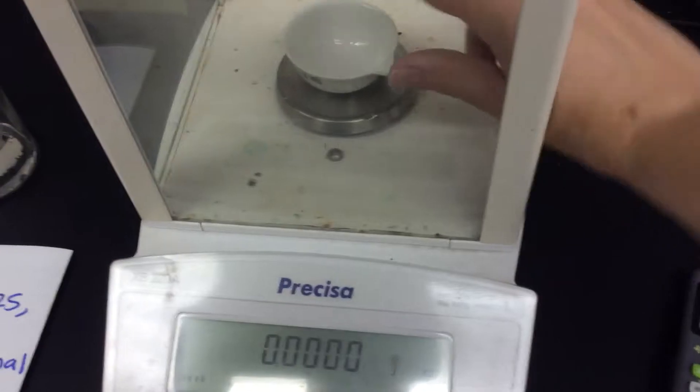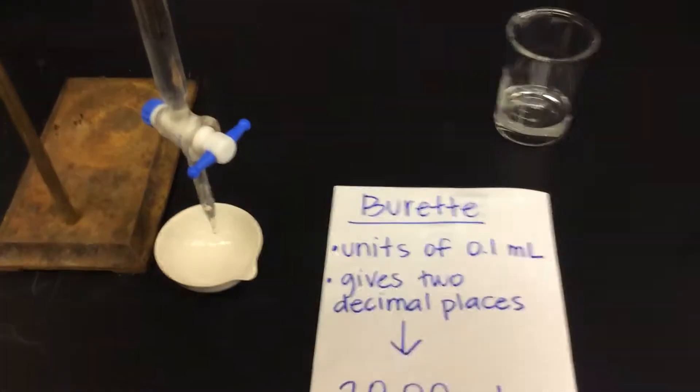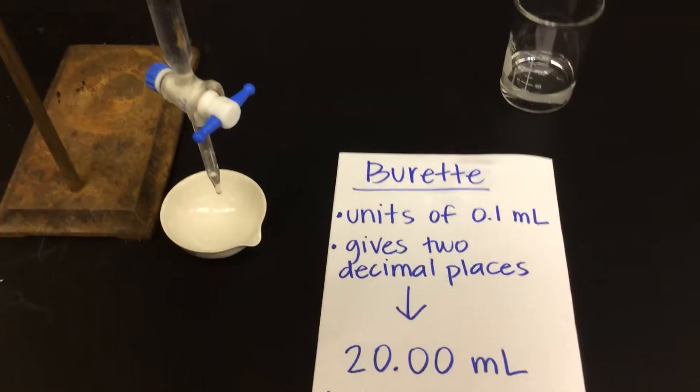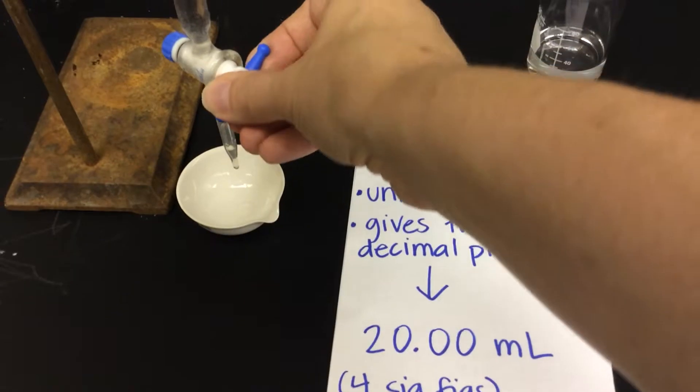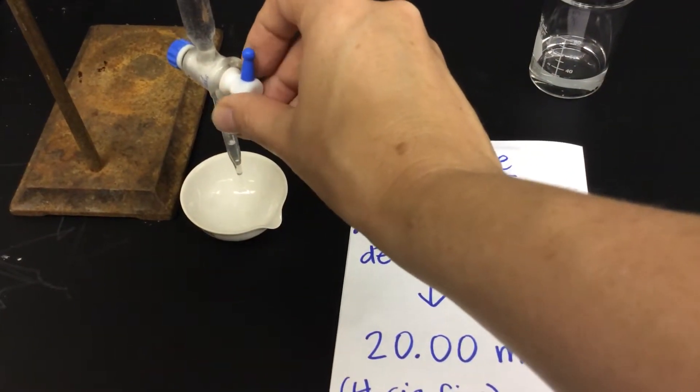And then I'm going to take our dish over to the burette. Now we just talked about the burette in the previous video. The burette is a very accurate measurement for volume. So we're going to dispense 20.00 milliliters from the burette.